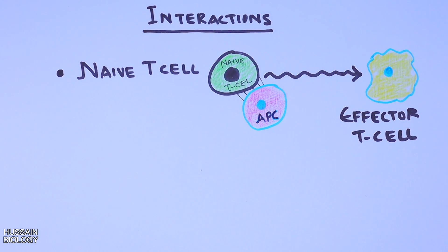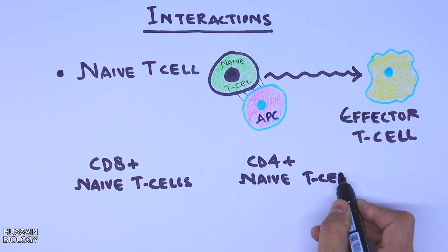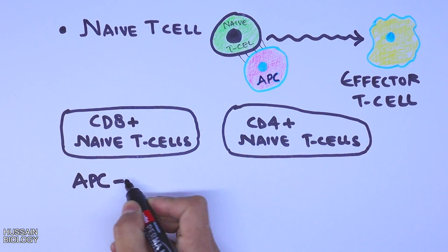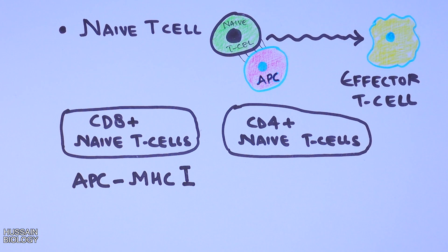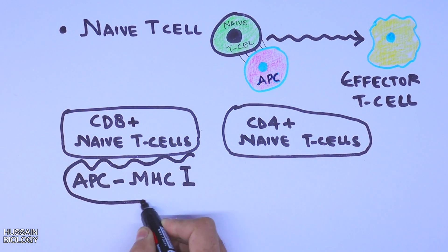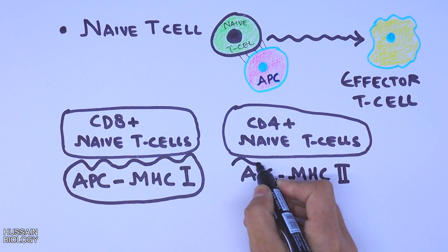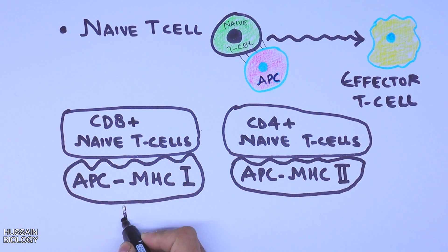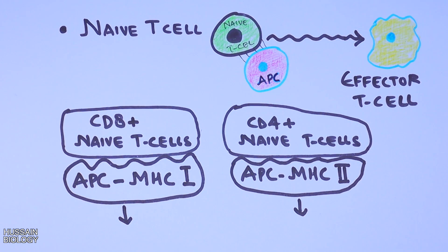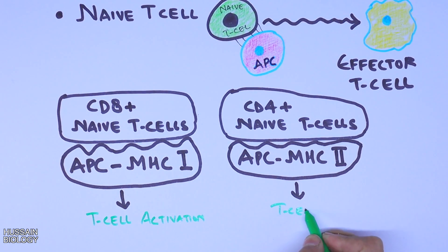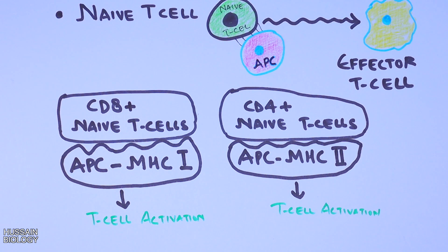We have two naive T cells — CD8 positive and CD4 positive. The antigen presenting cell which expresses the MHC1 molecule on its surface interacts with the CD8 positive cytotoxic T cell, while the APC expressing MHC2 interacts with the CD4 T helper cell. The interaction of the MHC molecule, with peptide bound in it, with the TCR of the T cell drives T cell activation.